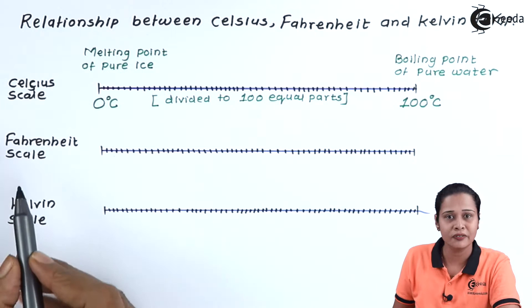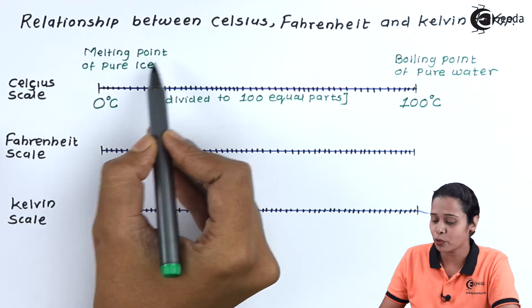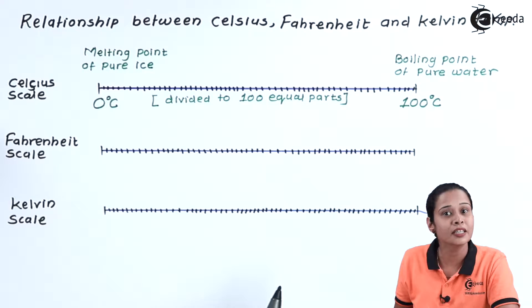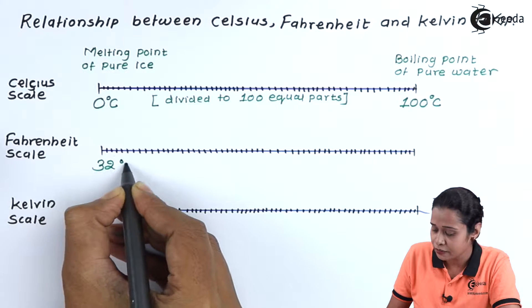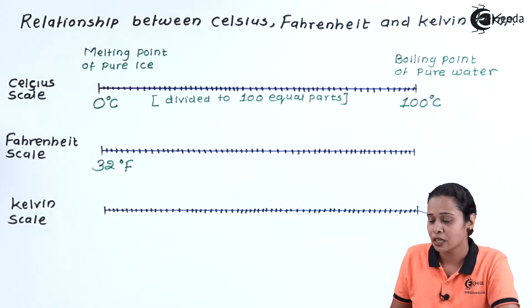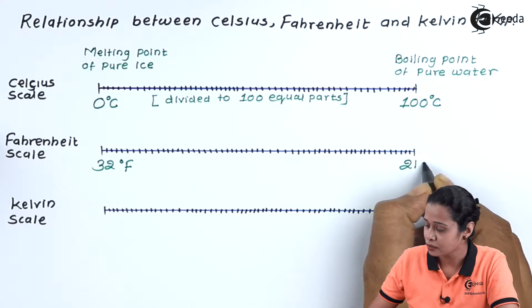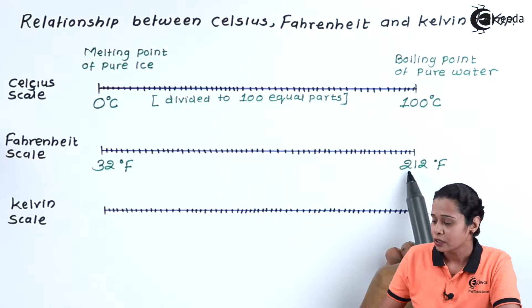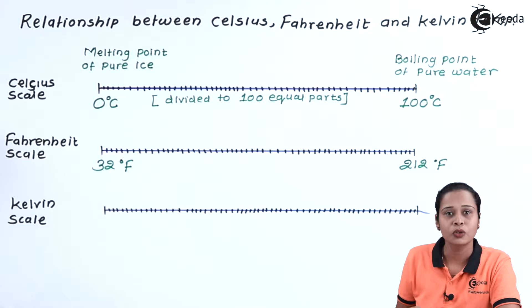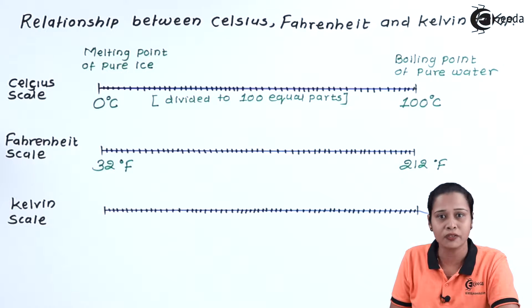The second one is the Fahrenheit scale. On the Fahrenheit scale, the melting point of pure ice is 32 degree Fahrenheit, and the boiling point of water is 212 degree Fahrenheit. 212 minus 32 gives us 180, so the scale is divided into 180 equal parts, and each part is 1 Fahrenheit.